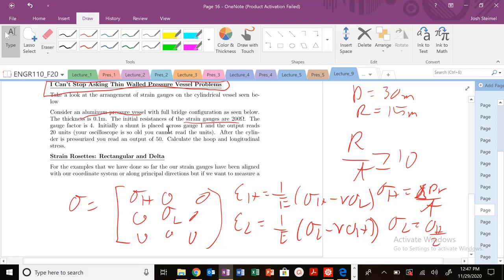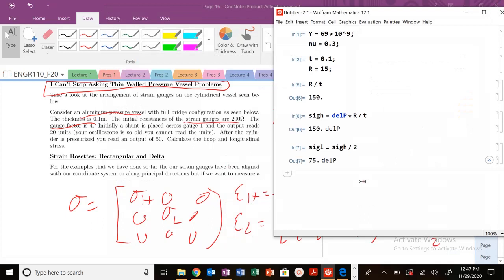Initial strain gauges are at 200. That's just telling us that our Wheatstone bridge at balance, i.e., when there's no pressure, our output voltage should be zero. Gauge factor is four, so F is equal to four. Let me go ahead and write that down in my notebook. My F is equal to four.